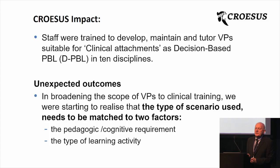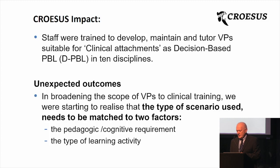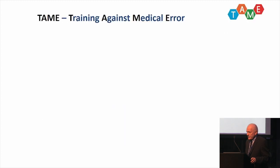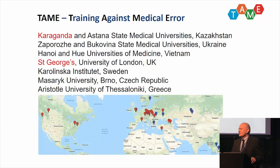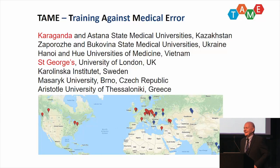We had learned that doing things the wrong way was really instructive, and now everyone was concerned about the very high rate of error in medicine and healthcare. For patients who represent at hospital, something between 20% to 30% are representing because of error, in every country across the globe. We got Karaganda to lead this project — we wrote a lot of it, got them to lead it, and they led it very well. The partners were Kazakhstan, Ukraine, Vietnam, St. George's, Karolinska, Masaryk, and Aristotle University.